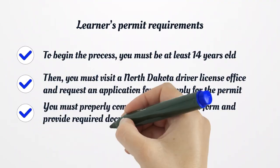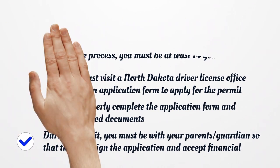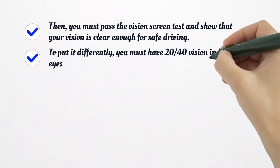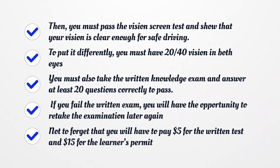Learner's Permit Requirements. To begin the process, you must be at least 14 years old. You must visit a North Dakota Driver License Office and request an application form. To apply for the permit, you must properly complete the application form and provide required documents during the visit. You must be with your parent or guardian so that they can sign the application and accept financial responsibilities. Then you must pass the vision screen test and show that your vision is clear enough for safe driving.